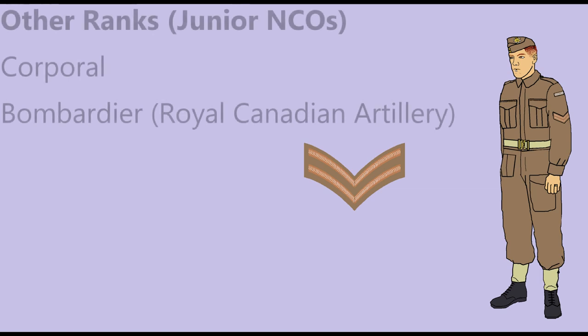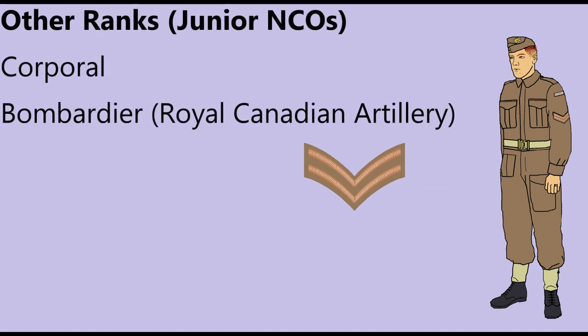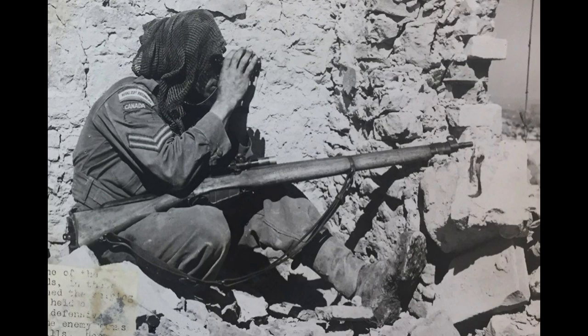The rank of Corporal, or Bombardier in the artillery, was signified by a two-bar chevron. Compared to some other armies, a Canadian Corporal was invested with a great deal of authority. In the infantry, for example, he commanded a ten-man rifle section.